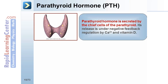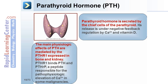Parathyroid hormone is secreted by the chief cells of the parathyroid. Its release is under negative feedback regulation by calcium and vitamin D. The main physiologic effects of PTH are mediated by PTHR1, expressed in bone and kidney. PTHR1 binds PTH and PTHrP, a peptide responsible for the pathophysiologic elevation of calcium in submalignancies.